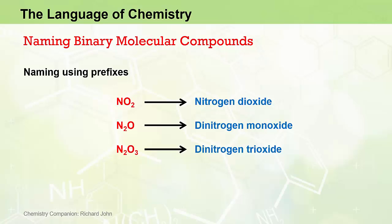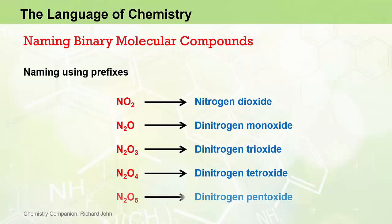N2O3 is dinitrogen trioxide — nitrogen is named first with the "di" prefix, and oxide takes the "tri" prefix identifying three oxygens. N2O4 is dinitrogen tetroxide, identifying two nitrogens and four oxygens. Finally, N2O5 is dinitrogen pentoxide, identifying two nitrogens and five oxygens.